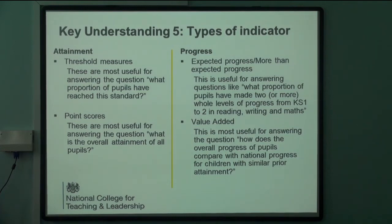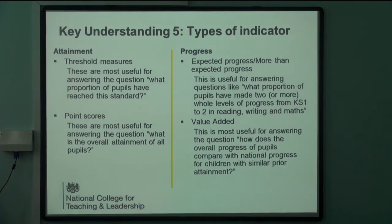And then there's value added. Value added measures progress from key stage one to the end of key stage two and gives it a numerical value. A hundred for value added is seen to be neutral. If it's over a hundred then you're adding value, and if you're under a hundred then you haven't added the value that you need to. Those are the different measures within both RaiseOnline reports.